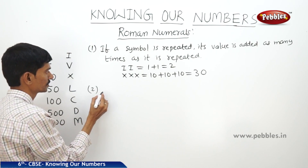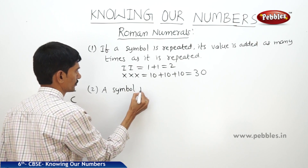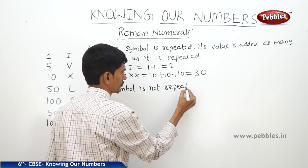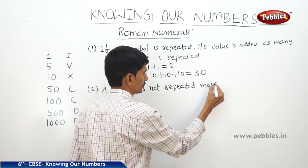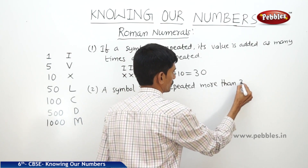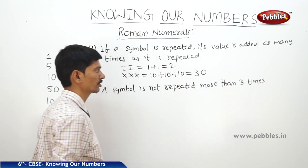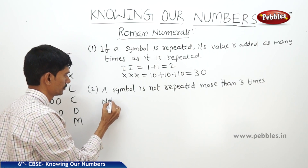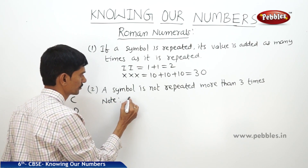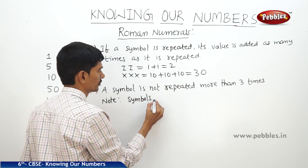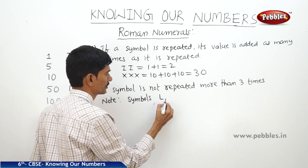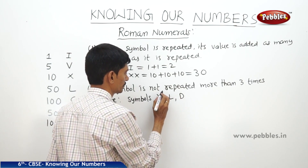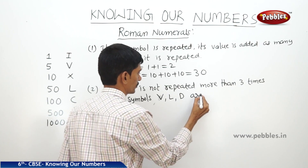The second rule is: a symbol is not repeated more than 3 times. Note that the symbols V, L, and D are never repeated.